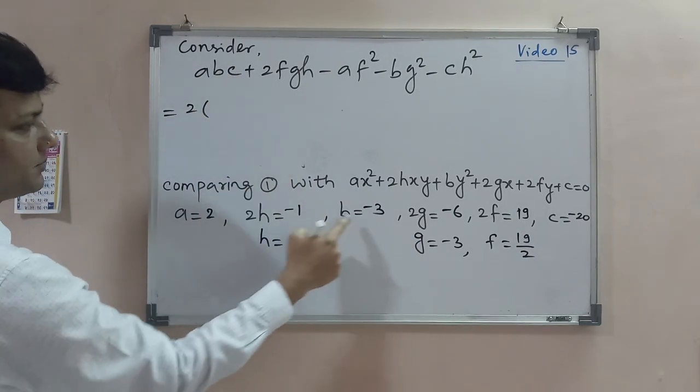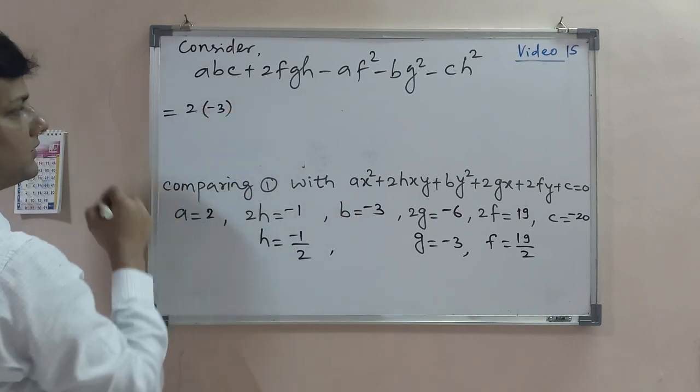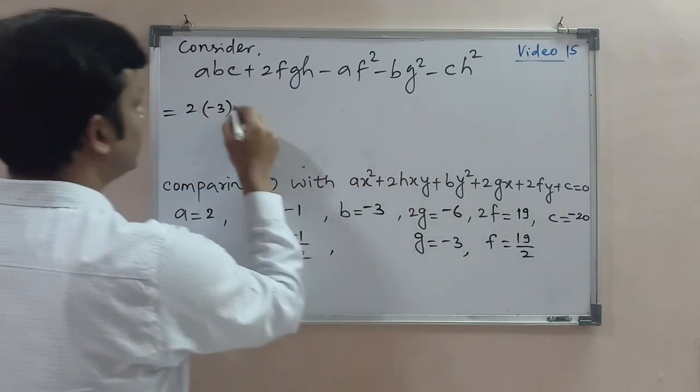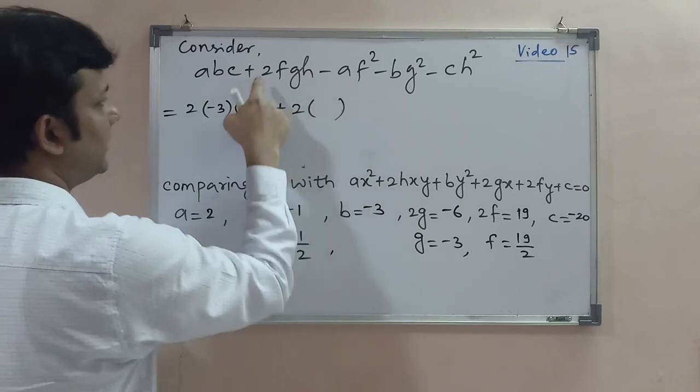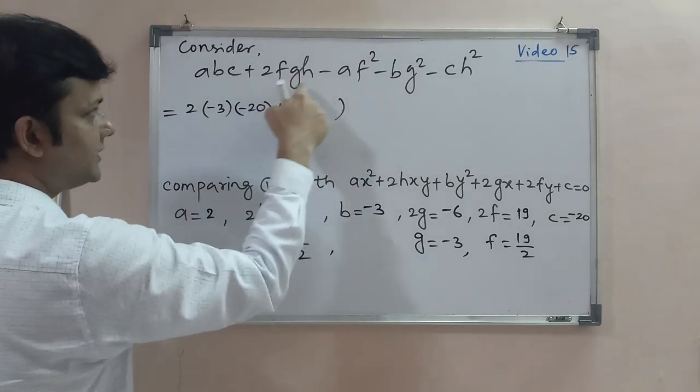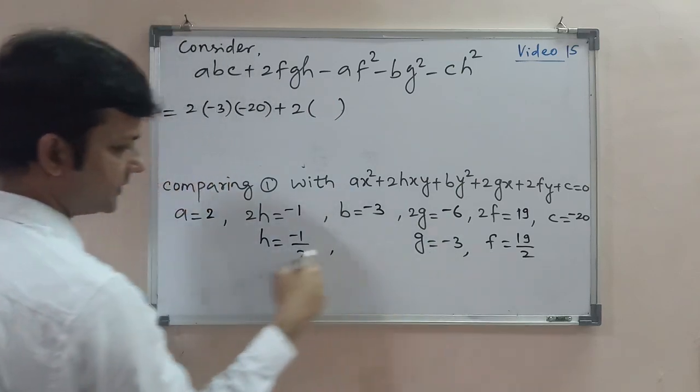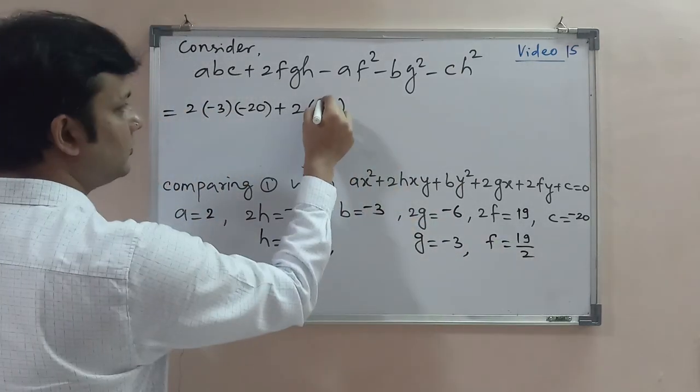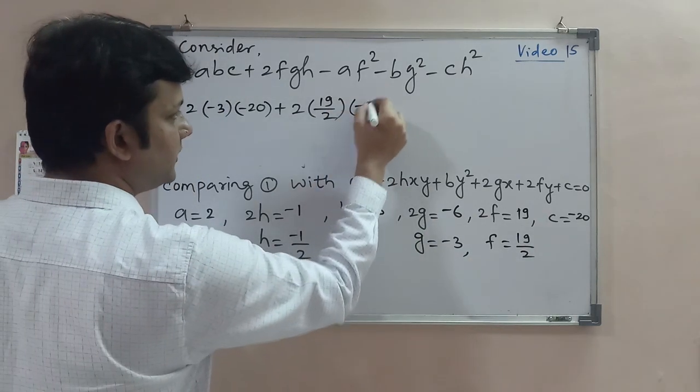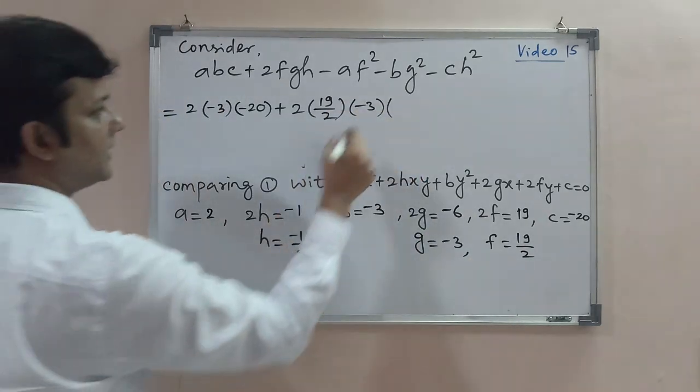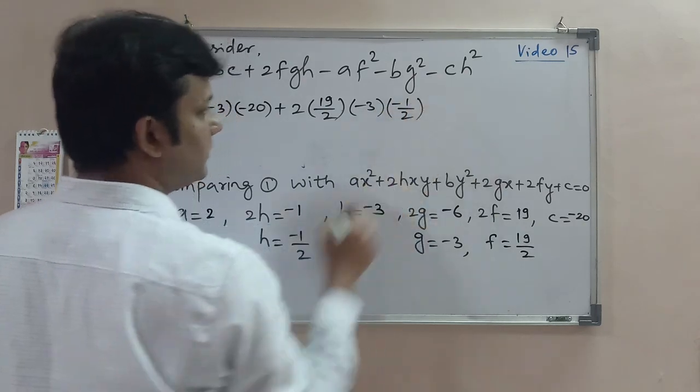So a is 2, b is -3, c is -20. Plus 2fgh: f is 19/2, g is -3, and h is -1/2.